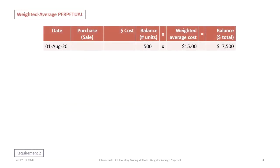This method is a little more complex than the previous method. That's why it's suggested that you preview Tutorial 16A on periodic first and then this one, because this one has a lot more work involved. We always begin with our beginning inventory: August 1st we had 500 units in inventory at a cost of $15, for a total of $7,500.